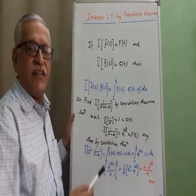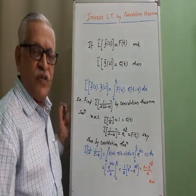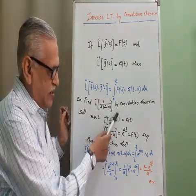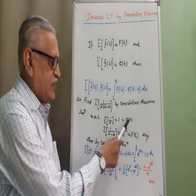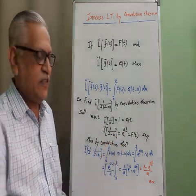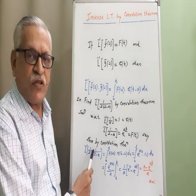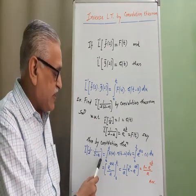Consider the rule: consider that function as g of t with a minimum number of terms of t. Here, no term of t, therefore we consider this term as g of t and remaining as f of t. Say the product of 1 by s into 1 upon s minus a.